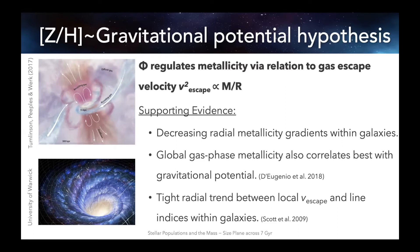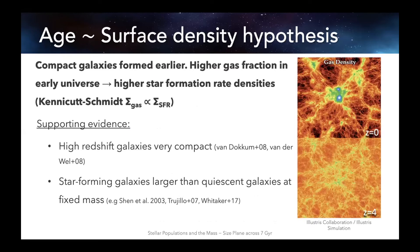There's supporting evidence for this dependence between gravitational potential and stellar metallicity, found also in radial measurements within galaxies and with the gas-phase metallicity. For the age relation, our hypothesis is that older galaxies simply formed earlier — compact galaxies formed earlier when the universe had a higher gas fraction, leading to higher star formation rate densities. It's essentially a fossil record of the Kennicutt-Schmidt relation. We initially discussed compactness-driven quenching mechanisms, but when the same age–surface density correlation was found in star-forming galaxies, we believe it must originate before quenching, as it's highly unlikely you'd get the same relation from two different mechanisms.